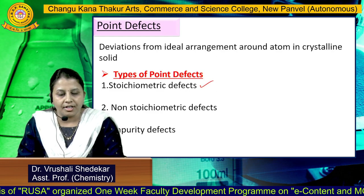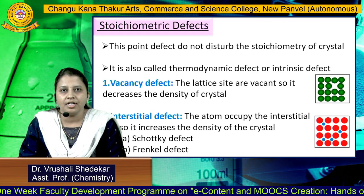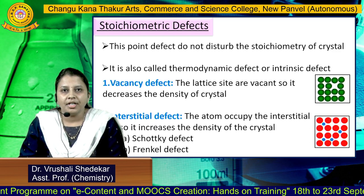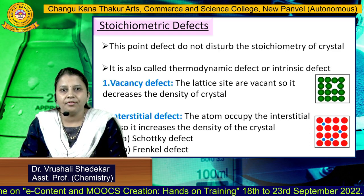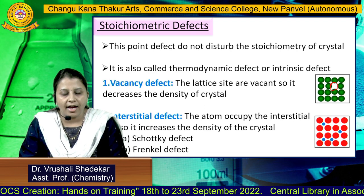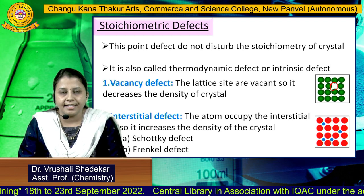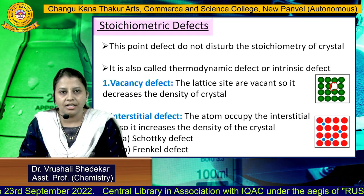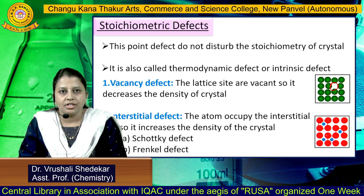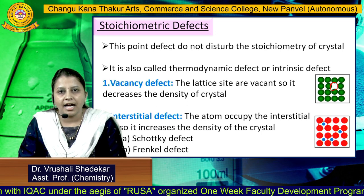Today we will discuss the stoichiometric defect. A stoichiometric defect is a point defect that does not disturb the stoichiometry of the crystal. It is also called a thermodynamic defect or intrinsic defect. Stoichiometric defects are divided into two types: vacancy defect and interstitial defect. In a vacancy defect, a vacancy is formed in the crystal, which decreases the density of that crystal. In an interstitial defect, ions go into an interstitial site of the crystal, which increases the density of that crystal.